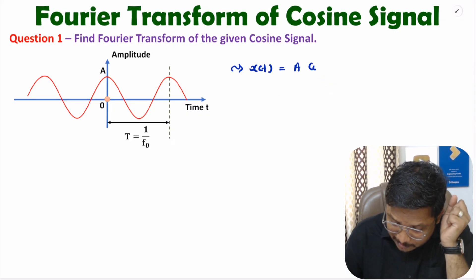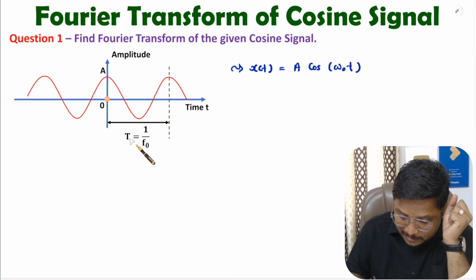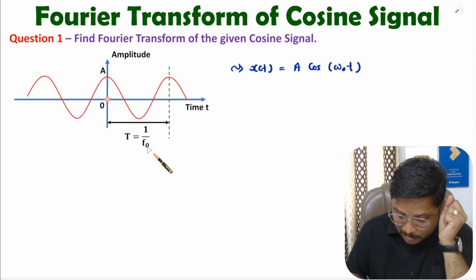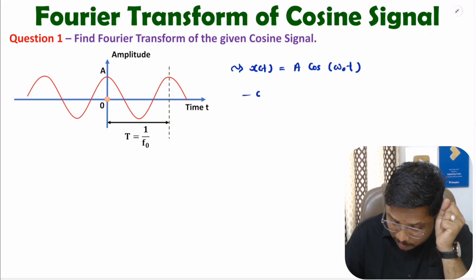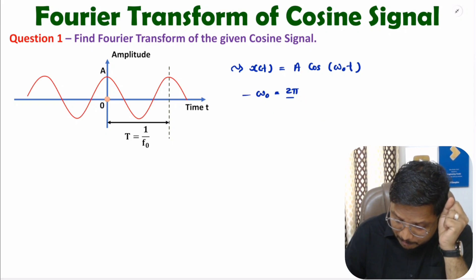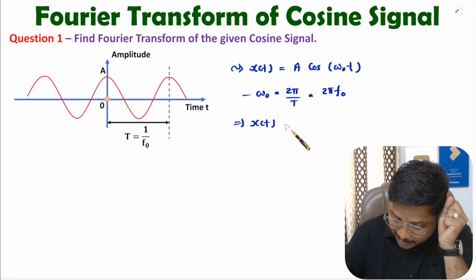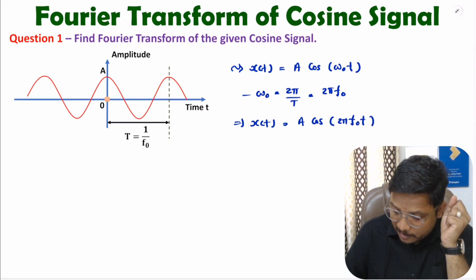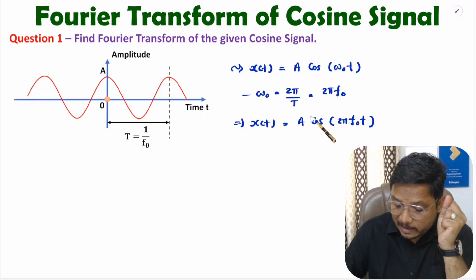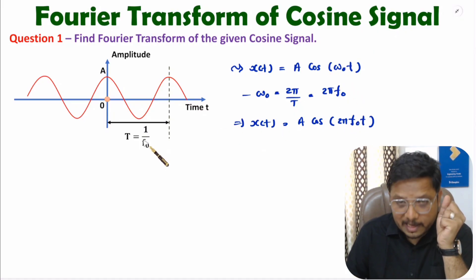So here we have the cosine signal x(t) with amplitude A. This cosine signal has angular frequency ω₀. One cycle duration is 1/f₀, and since ω₀ = 2π/T, and T = 1/f₀, we get ω₀ = 2πf₀. So we can write x(t) = A·cos(2πf₀t). That is how we express the signal in terms of both ω₀ and frequency f₀.